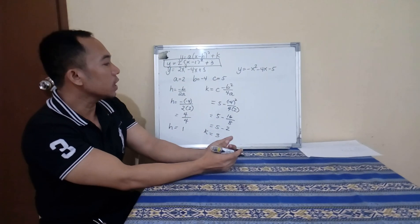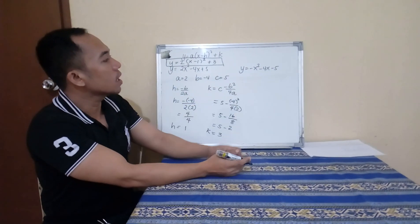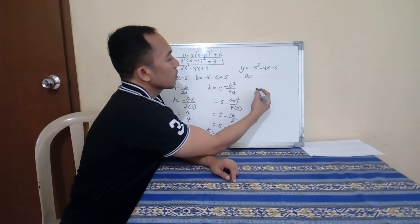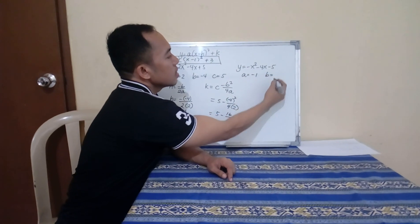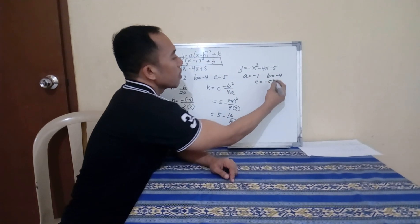Without using completing the square, we just use the formula for H and K. What about this one? Our A is negative 1, B is negative 4, and C is negative 5. Again, we will just use the formula for H and K.